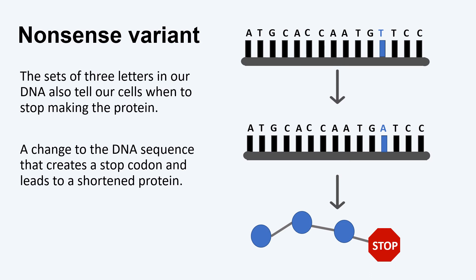In addition to coding for amino acids, sets of three letters in the DNA also tell our cells when to stop making the protein. These are called stop codons. A variant that changes a letter in our DNA and creates a stop codon is called a nonsense variant. These types of variants lead to shortened proteins. Shortening a protein can affect how the protein works in the body.